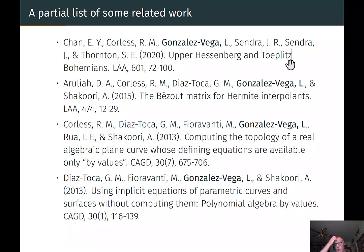Here's a partial list of some related work with Lalo. The most recent on this list is the Linear Algebra and Applications paper, Upper Hessenberg and Toeplitz Bohemians. That represented a substantial body of work, and we actually made some interesting progress on that. I recommend that you have a look at that paper. An older paper, also in LAA, is on the Bezout matrix for Hermite interpolates. There, no Bohemian stuff, but the Hermite interpolation is there.